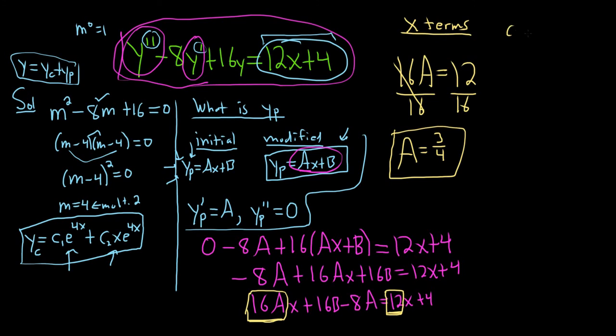To find b, we can match the constant terms. We have 16b minus 8a, and that's all equal to 4.